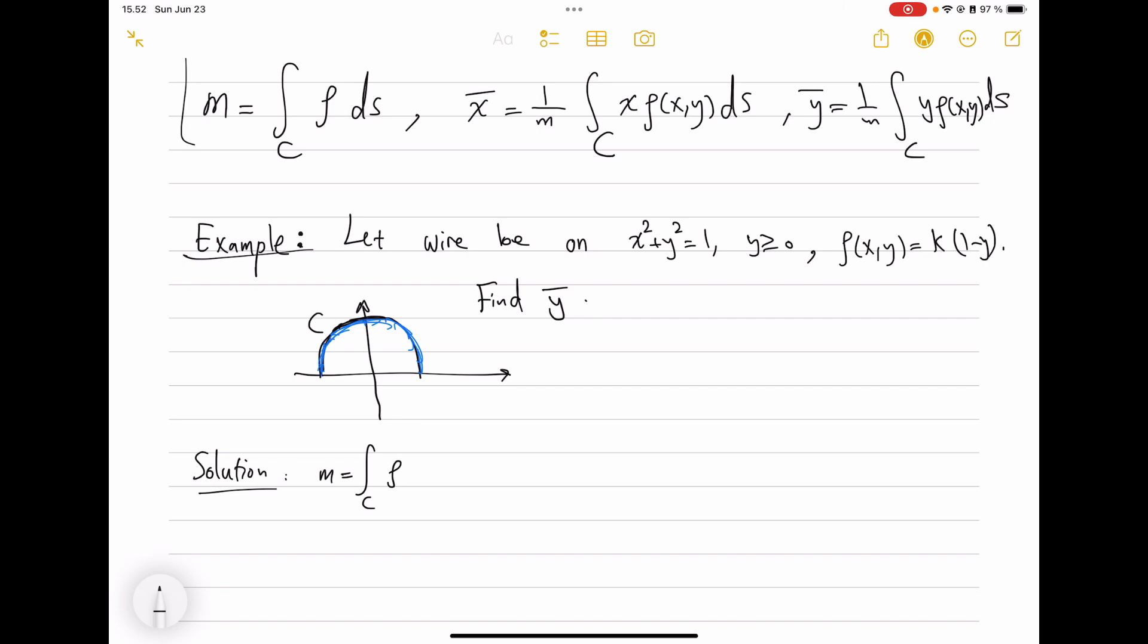So the wire is occupying or is in the shape of a semicircle of radius one. This is your wire, this is the curve C. And the mass density is some number k(1 - y). x̄, because this is symmetric with respect to x, should be clearly zero. So find ȳ. How do we do this?